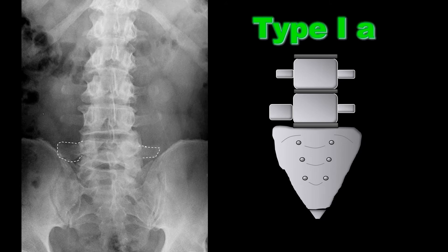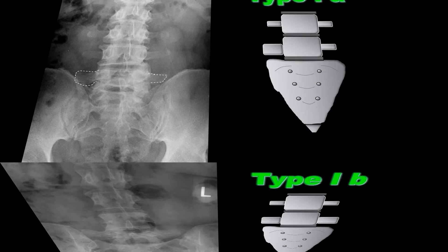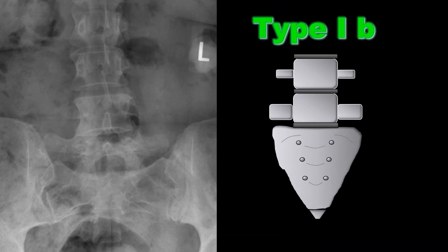A Type 1a lumbosacral transitional segment is where one of the transverse processes is enlarged, hypertrophied, or dysplastic — usually by approximately 19 millimeters. Really, all this is is an enlarged transverse process. A Type 1b is a bilateral enlargement of the transverse processes. Similar to Type 1a, this is not clinically important; it's just enlargement of the transverse processes.